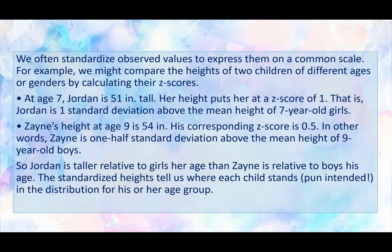Well, let's talk about an example here. We often standardize observed values to express them on a common scale. For example, we might compare the heights of two children of different ages or genders by calculating their z-score. So for example, Jordan is 7 and is 51 inches tall. Her height puts her at a z-score of 1. So she's actually one standard deviation above the mean. That is, Jordan is one standard deviation above the mean height of all 7-year-old girls, which means she's taller than other girls her age.